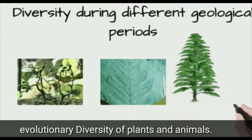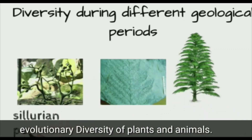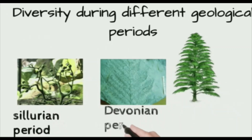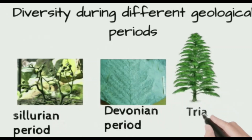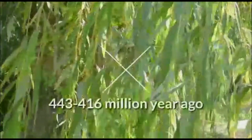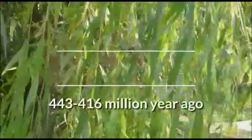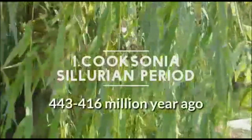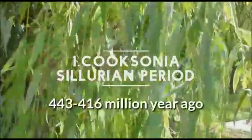In this video we are going to discuss those species of plants which were found during different geological times. The first plant we are going to discuss is Cooksonia, from the Silurian period.